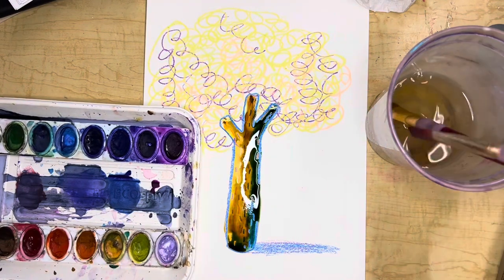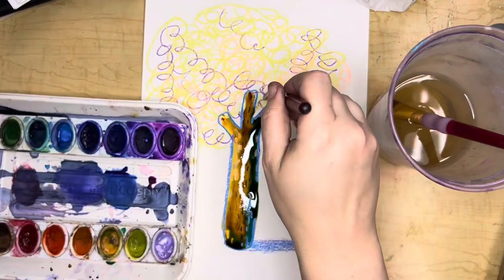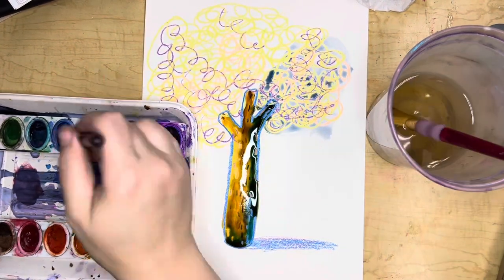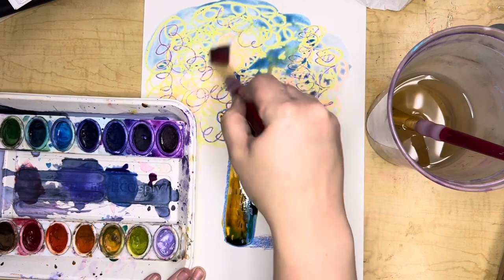Now I'm also going to show you watercolor. With watercolor, use a clean wet brush for every color and swirl it in the pigment to add those colors into your tree.